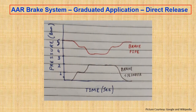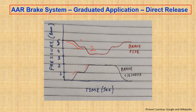Let's see a graph of how it works. In the AAR brake system, the brake pipe can be dropped gradually in steps — steps one and two — while applying, and the brake cylinder values are attained accordingly. However, while releasing, even though the brake pipe is increased in steps, the brake cylinder gets released in one shot. This is the direct release brake system, which is very helpful for long-haul trains where you need to release the brake system all at once.